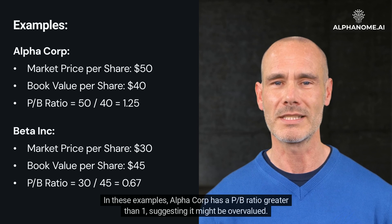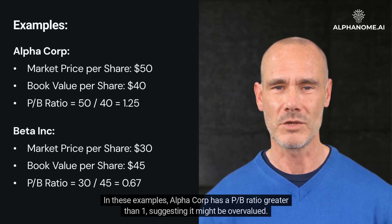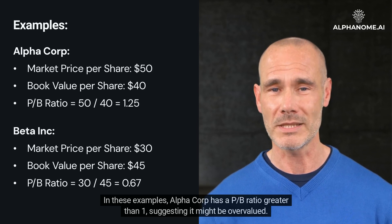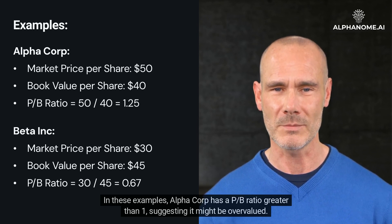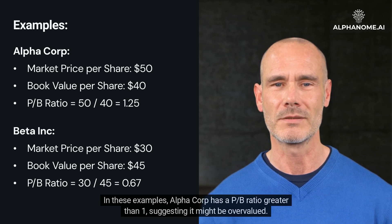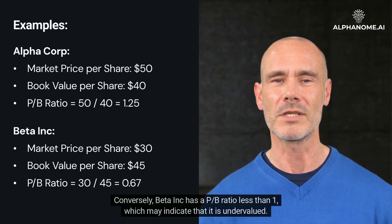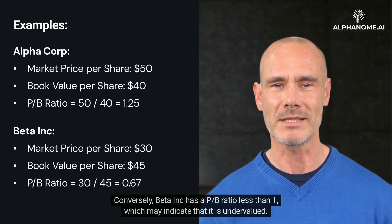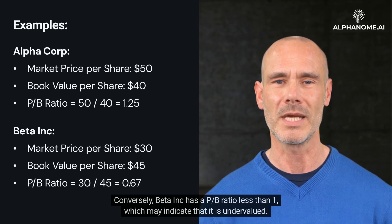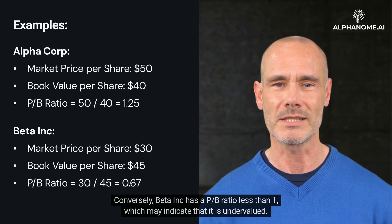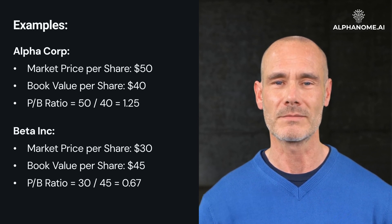In these examples, AlphaCorp has a P/B Ratio greater than 1, suggesting it might be overvalued. Conversely, BetaInc has a P/B Ratio less than 1, which may indicate that it is undervalued.